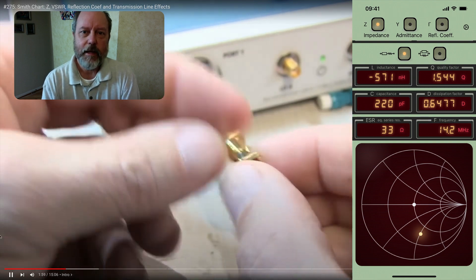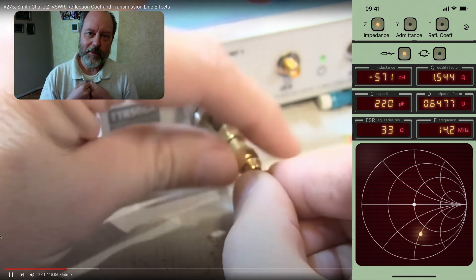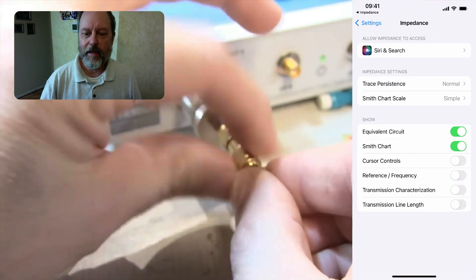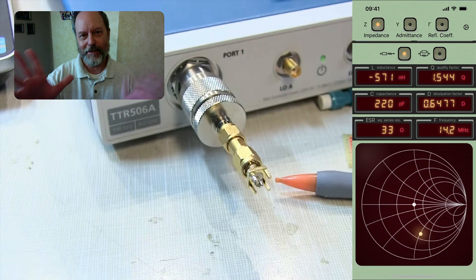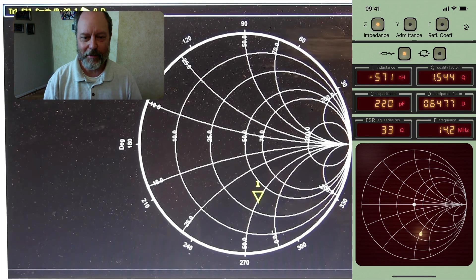So then next, Alan actually constructs one of these loads and measures it on his VNA. In the app, I'm going to change the grid lines to match Alan's VNA so we can just compare the two and they look pretty much the same.